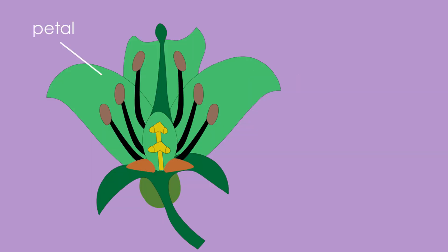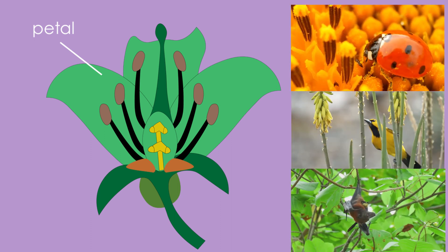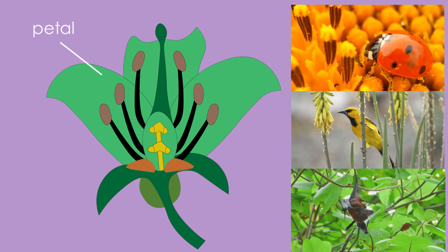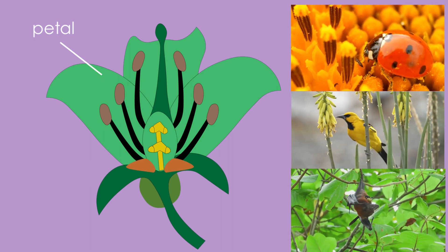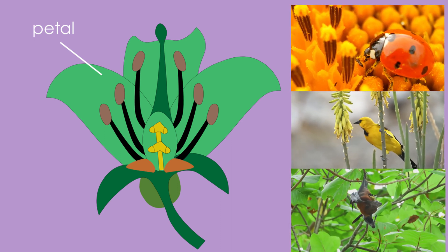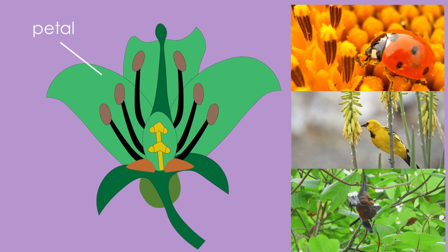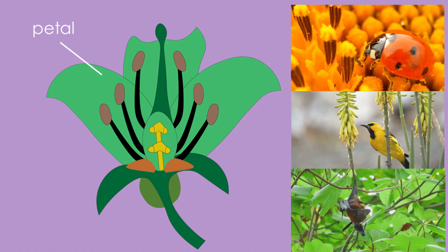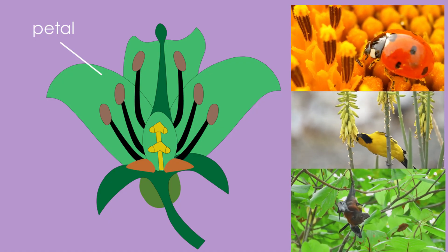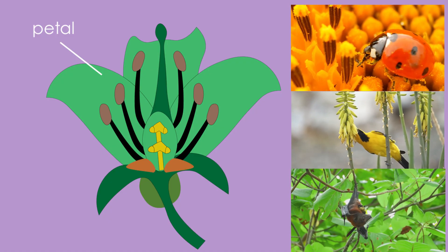This is a petal. Petals are often colorful and conspicuous. Petals attract pollinators such as insects, birds, and bats.